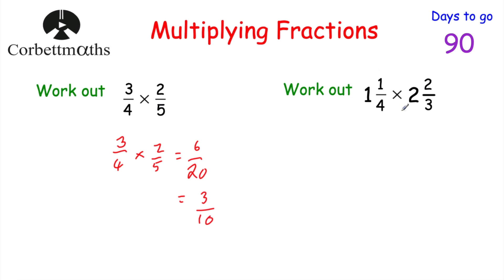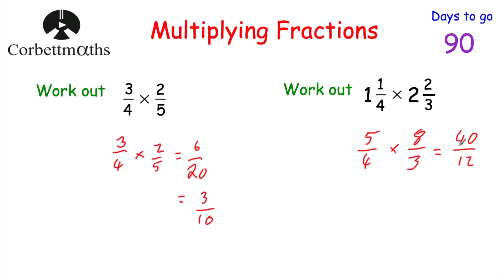Now we've got to work out one and a quarter multiplied by two and two thirds. Let's make them top-heavy fractions. One times four is four, plus one is five, so that's five quarters. For two and two thirds: two times three is six, plus two is eight, so that's eight thirds. We've got five quarters multiplied by eight thirds. Five times eight is 40, and four times three is 12, so we've got 40 twelfths. Both numbers are divisible by four — 40 divided by four is ten, 12 divided by four is three — so that's ten thirds. Converting to a mixed number: three goes into ten three times, remainder one. So the answer is three and a third.